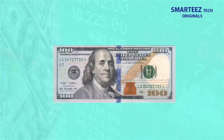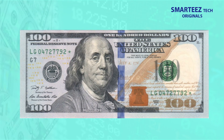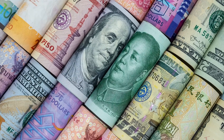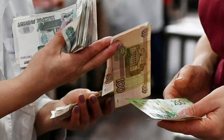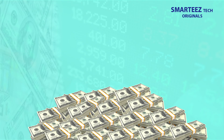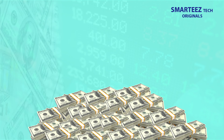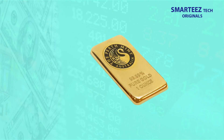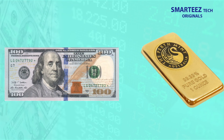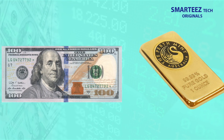It was decided that all countries needed to peg their currency to the US dollar — meaning each currency would be at a fixed ratio with the US dollar — and hence, to maintain that peg, countries needed to hold sufficient US dollar reserves. The gold convertible currency became the US dollar in the final agreement, making the US dollar the global currency.